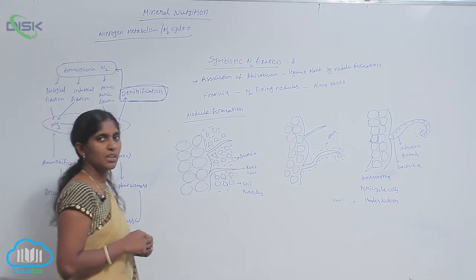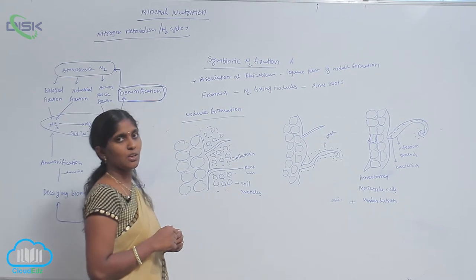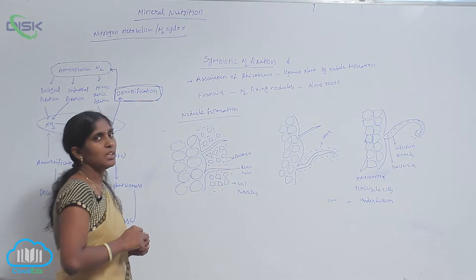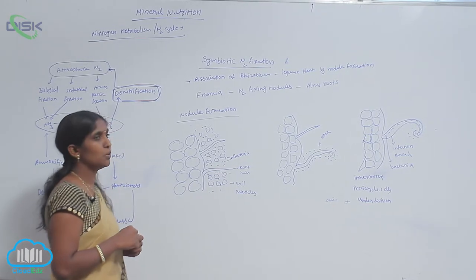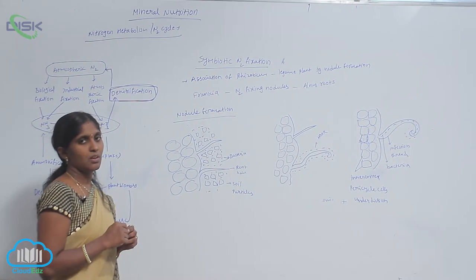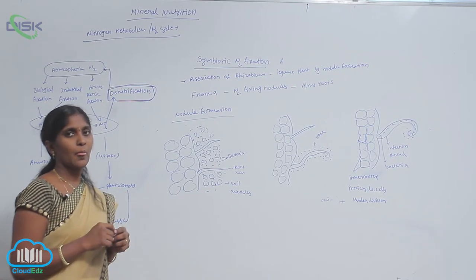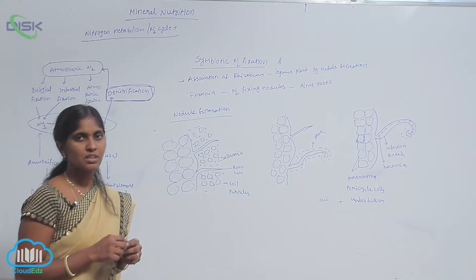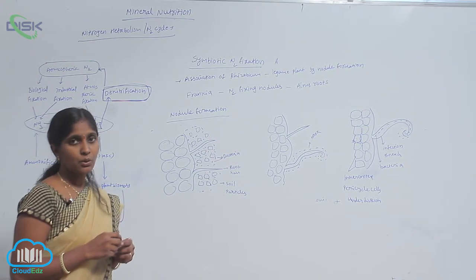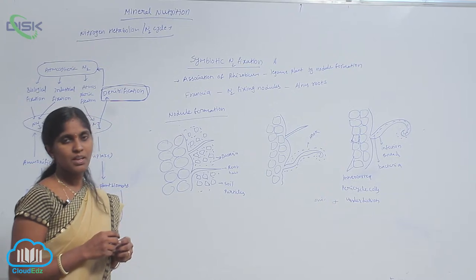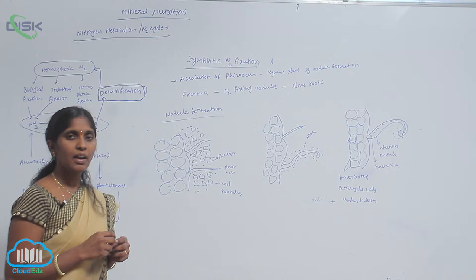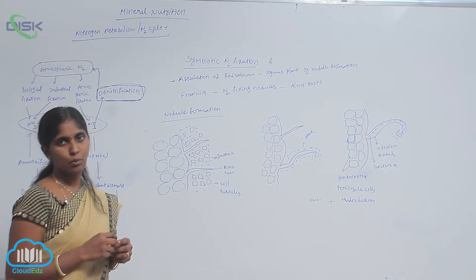The type of bacteria is rhizobium bacteria. It is a rod-shaped bacteria. Rhizobium bacteria is associated with legume plants by producing of nodules. Nodules are the tissue-like structure. They consist nitrogenase enzyme as well as rhizobia bacteria and leghemoglobin.